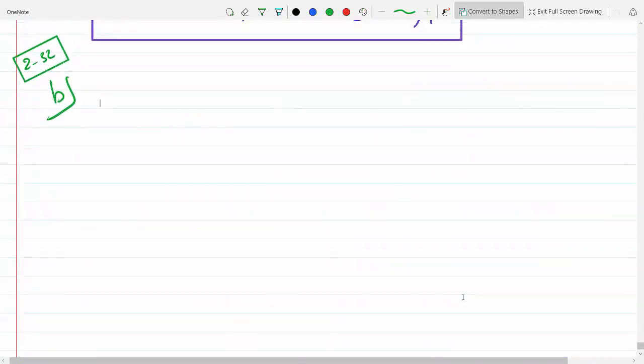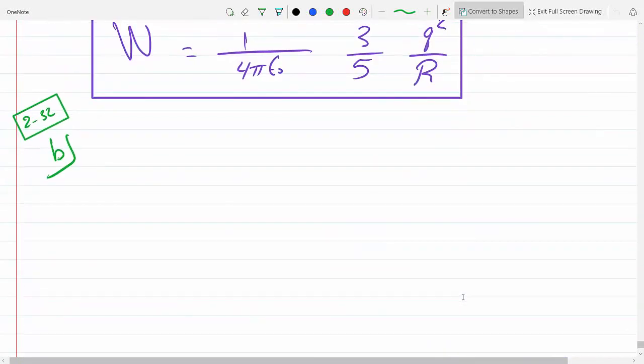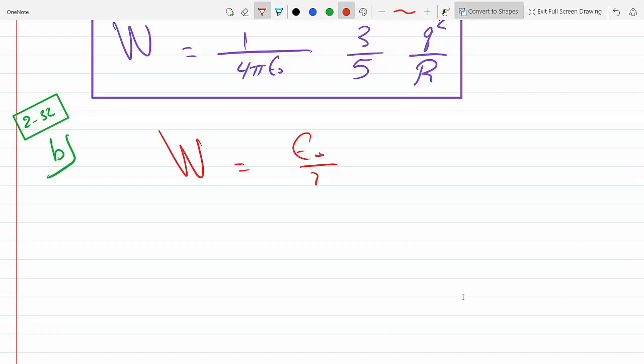You can see in part B, he wants you to find the electric field using equation 2.45. If you go up to equation 2.45, you will see that the energy equals epsilon over 2, the integral volume integral of electric field squared d tau, and this is integrated over all space. Very important that this is integrated over all space.